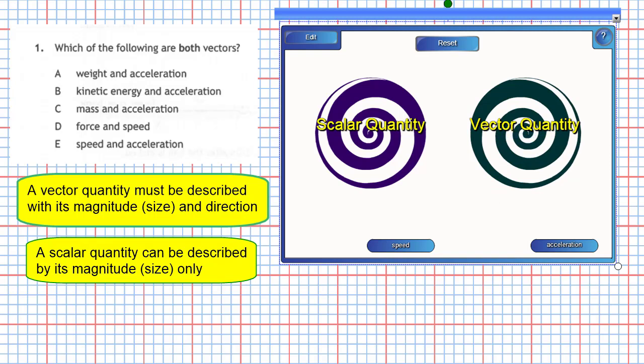Now, these two here: speed and acceleration. Let's look at acceleration and take a guess. Well, it could be a scalar quantity.